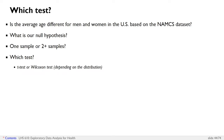The choice of test depends on the distribution of age in the dataset. If age is normally distributed — a nice bell curve — we can run a t-test. If it's not normally distributed, we have to run a Wilcoxon test, because unlike a t-test, a Wilcoxon test makes no assumptions about the underlying distribution of the data.